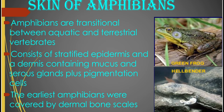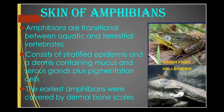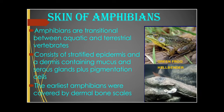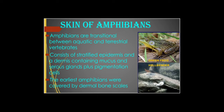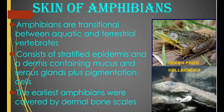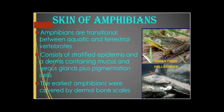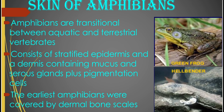What about the skin of the amphibians? Amphibians are actually a transition between the aquatic and terrestrial vertebrates. When you take a look at the skin of the amphibians, you see that it consists of stratified epidermis and also the dermis, which contains mucus and serous glands as well as pigmented cells. The earliest forms of amphibians were covered by dermal bony scales. You have the green frog as an example of such an amphibian.